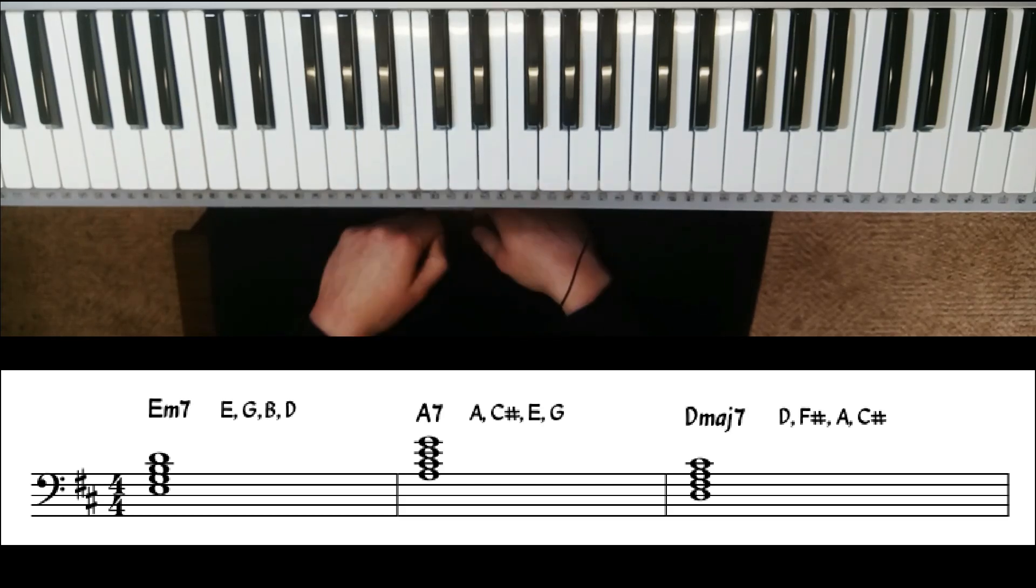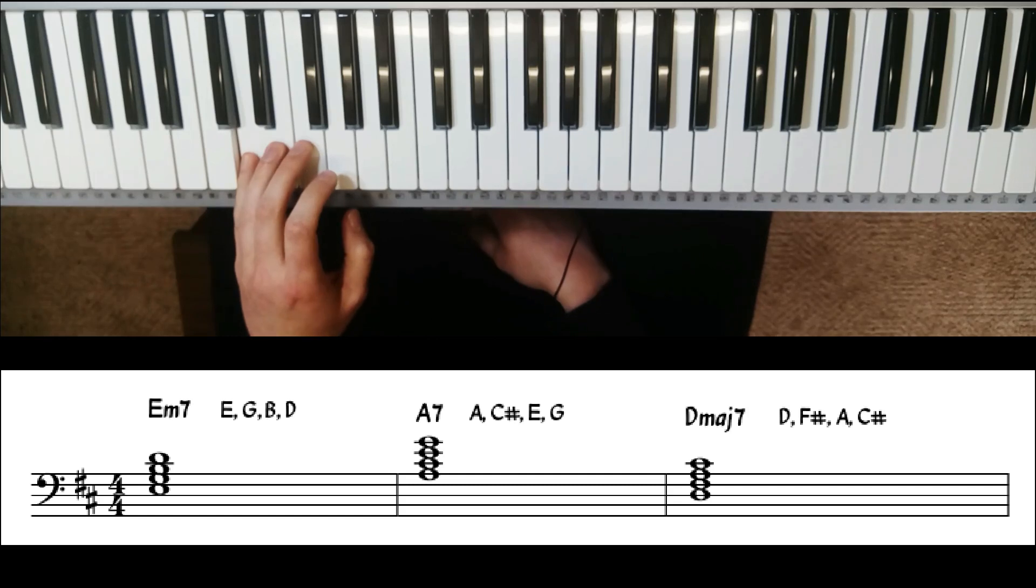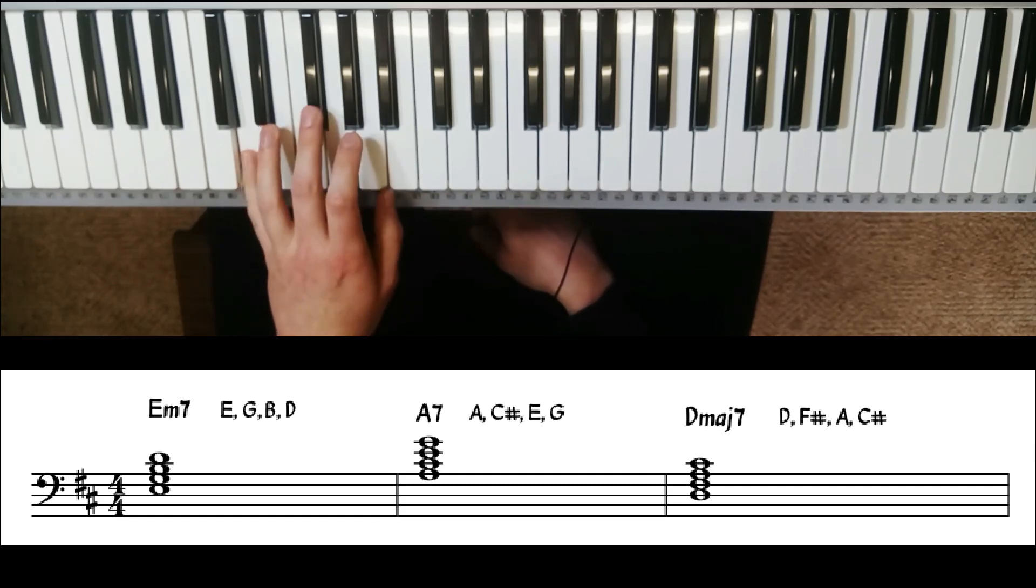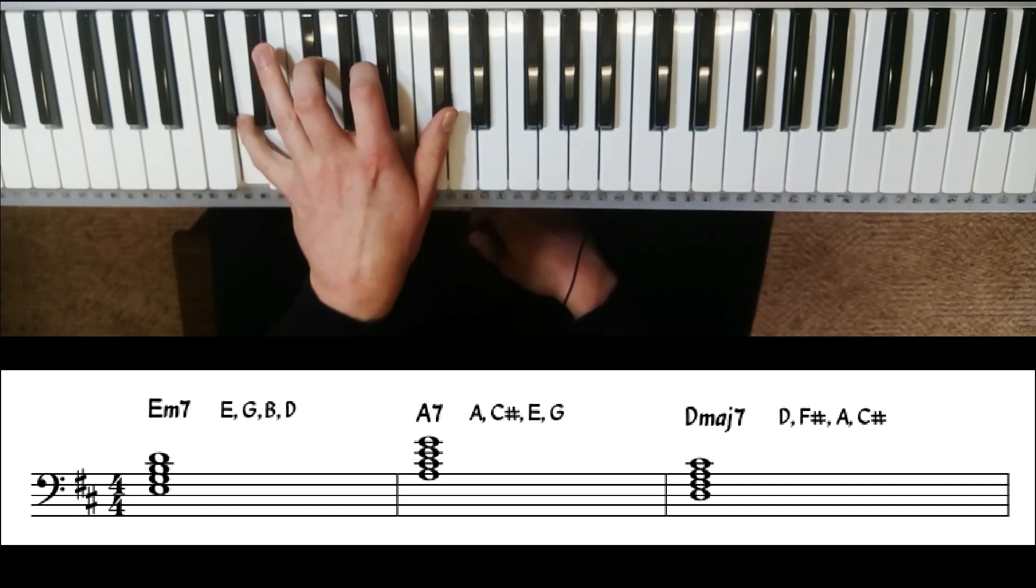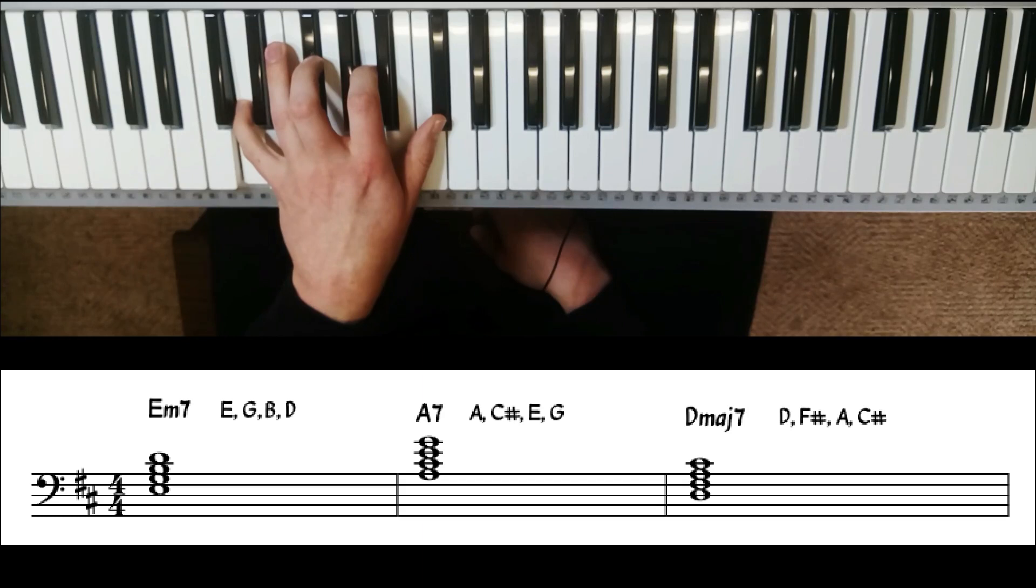And for our 1 chord, it's going to be built on D. So we play D. We have an F in the chord, so it's an F sharp. A and a C in the chord as well, but now C sharp. And that's our D major 7.